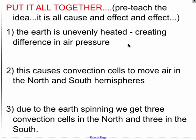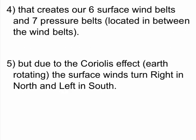The Earth is unevenly heated, creating differences in air pressures. Those differences in air pressures create convection cells that move air in the north and south hemispheres. And due to the Earth spinning, we're going to end up getting three convection cells in each hemisphere instead of one. This also creates the six surface wind belts — three in the north, three in the south hemisphere.